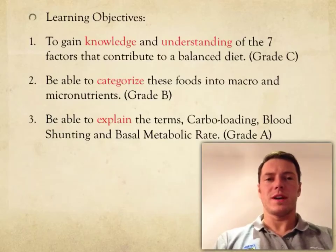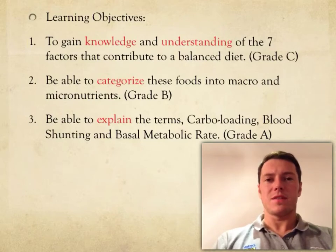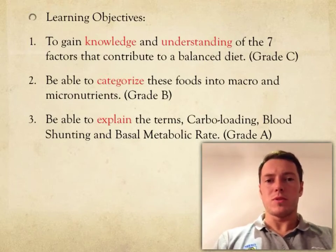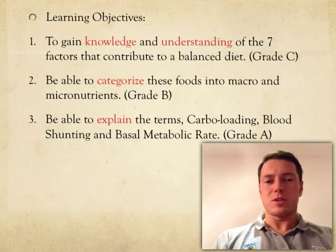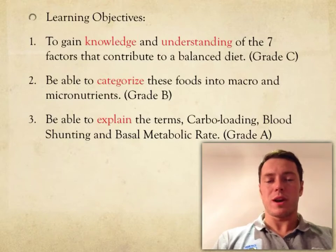Within today's lesson on diet, you will gain a knowledge and understanding of the seven factors that contribute to a balanced diet. You will also be able to categorise these foods into both micro and macronutrients. Most of you as well, by the end, should be able to explain the terms carbo loading, blood shunting and basal metabolic rate. Don't be afraid by some of the terminology being introduced within the learning objectives as this will become a lot clearer as we go through the presentation.